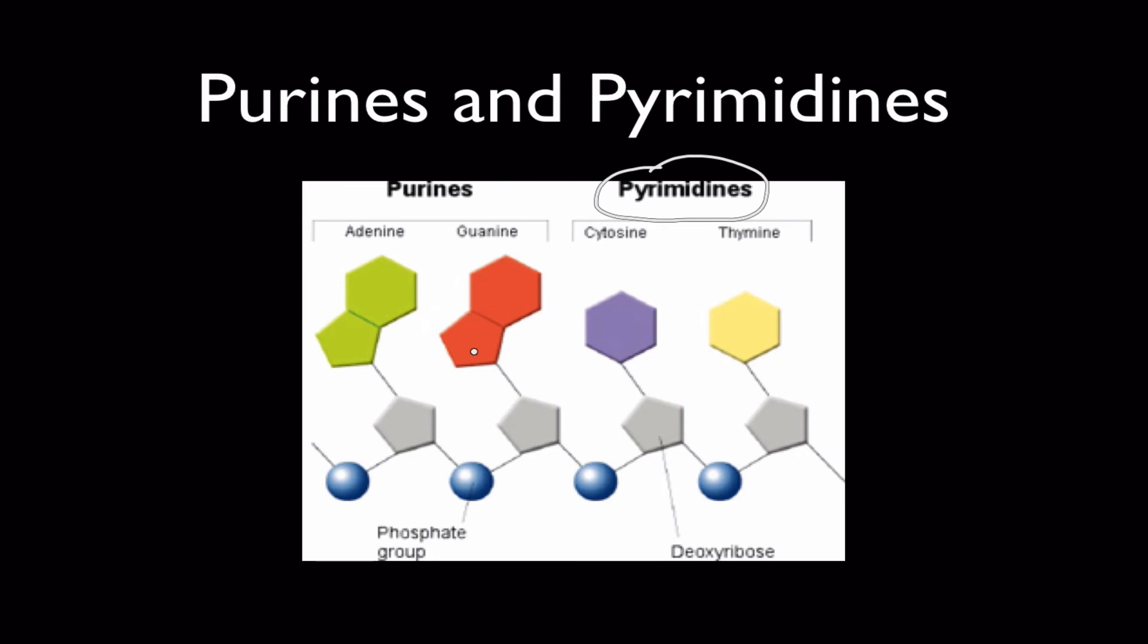If you remember from biology, when you build DNA you always pair adenine with thymine—you're pairing a purine with a pyrimidine. Guanine of course goes with cytosine, again purine with pyrimidine. You never put purine with purine or pyrimidine with pyrimidine in DNA. We'll talk more about the repercussions of those decisions later when we discuss DNA structure and replication.